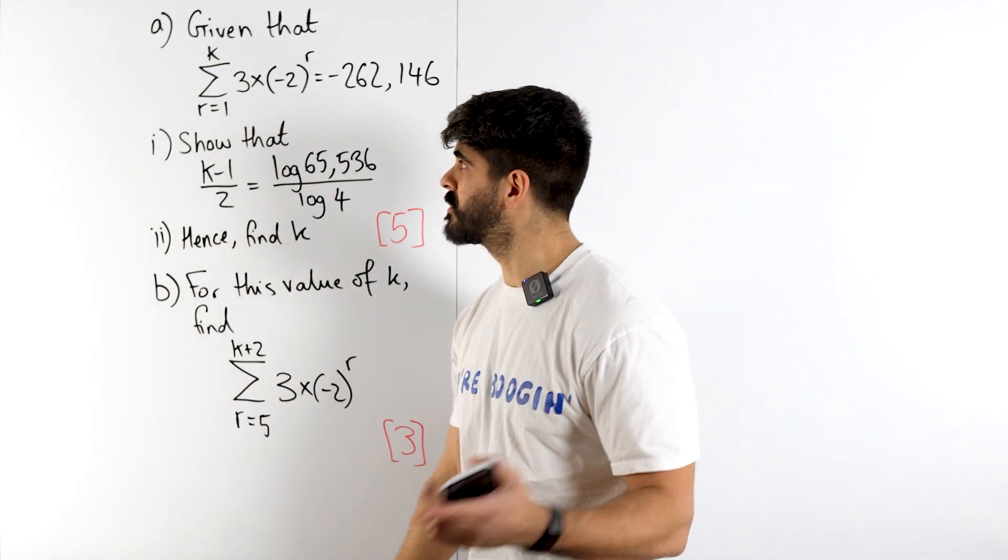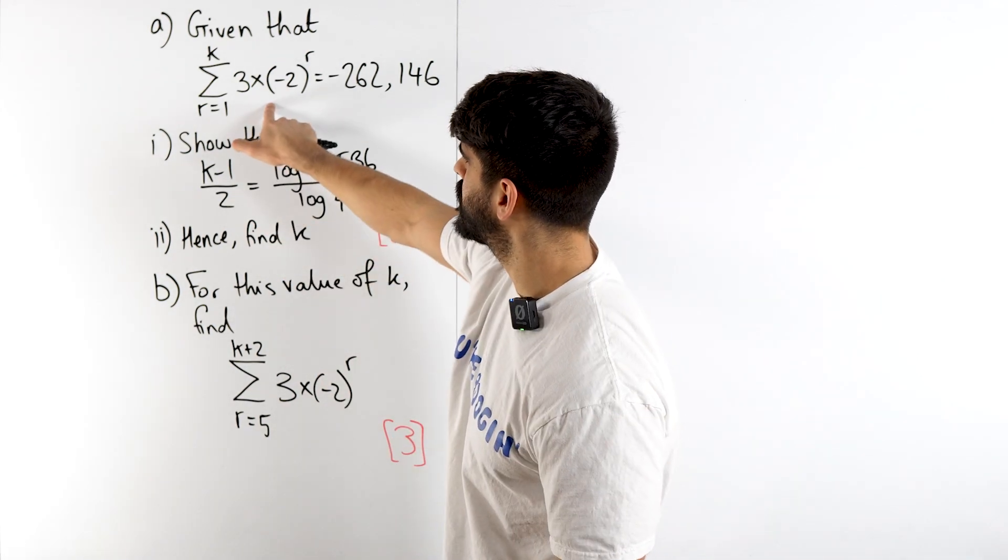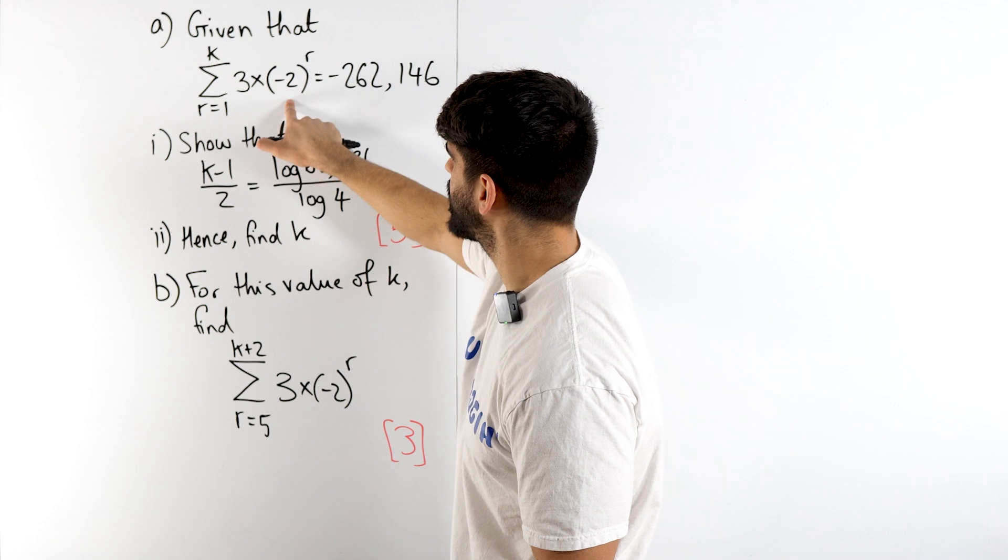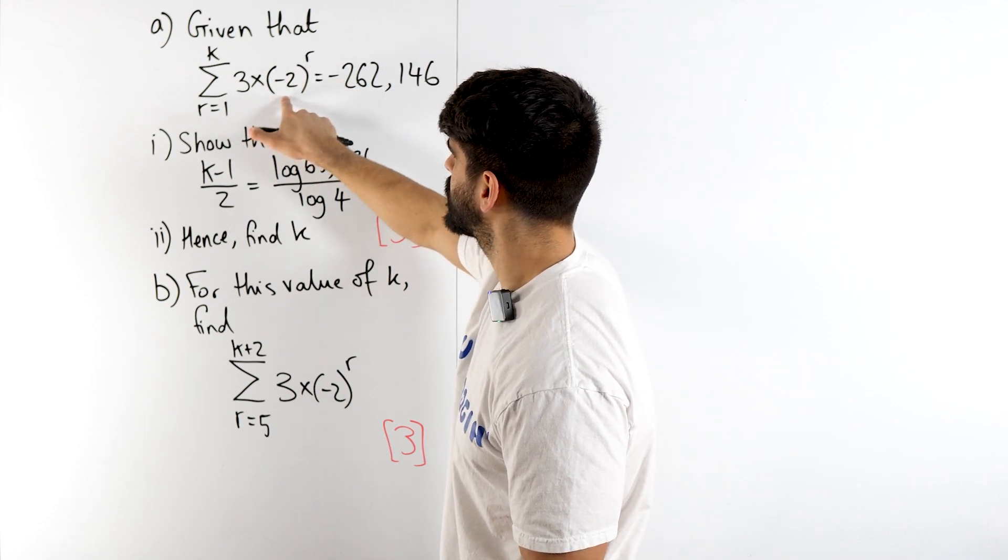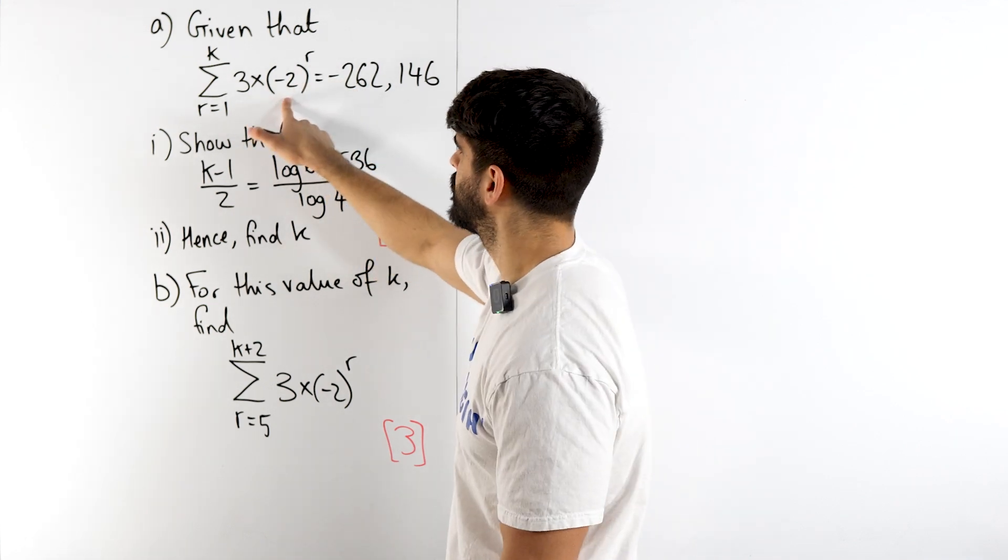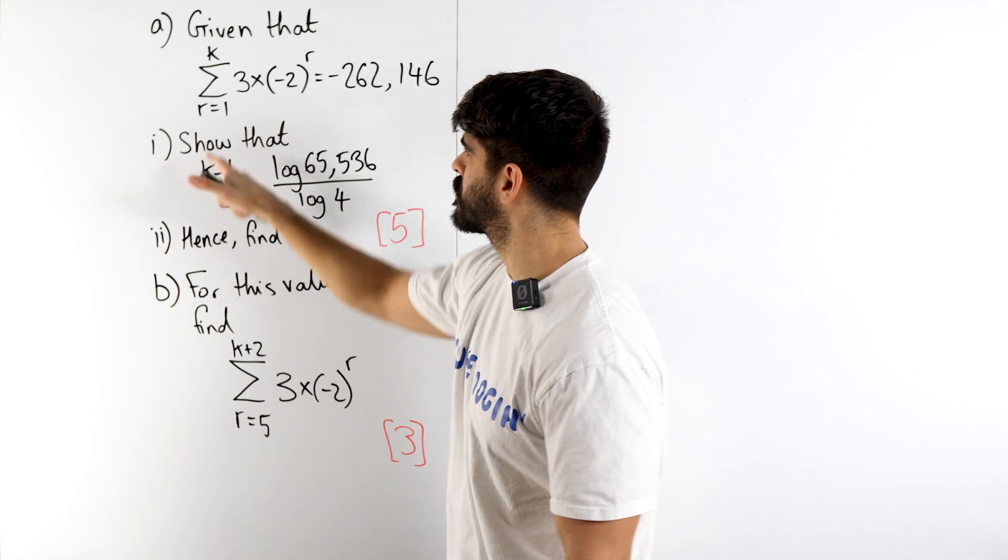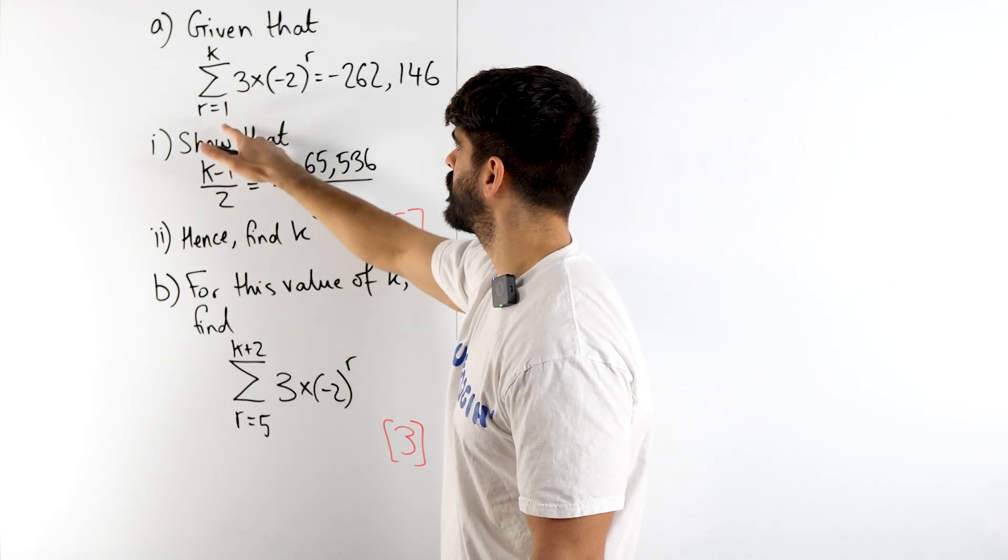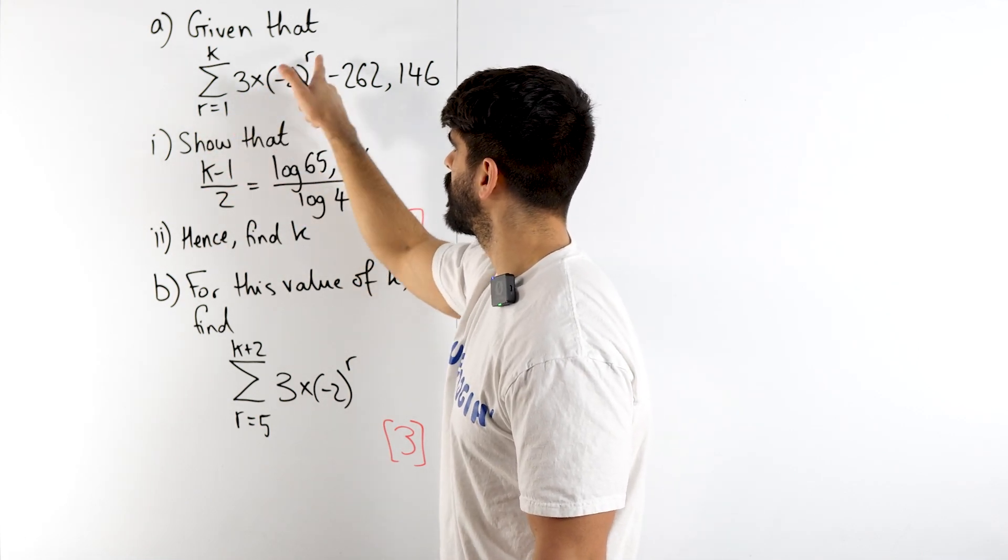Now, in A-level math we need to recognize certain summations. This is a geometric sequence because we have a base number and a power. So these are the powers of minus 2. Now you can generate terms of the sequence by just subbing in different values of r. r is 1, r is 2, r is 3 etc.